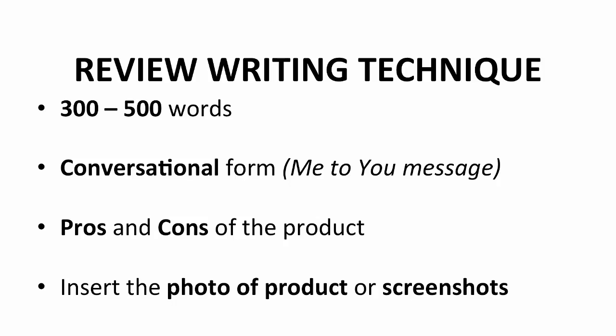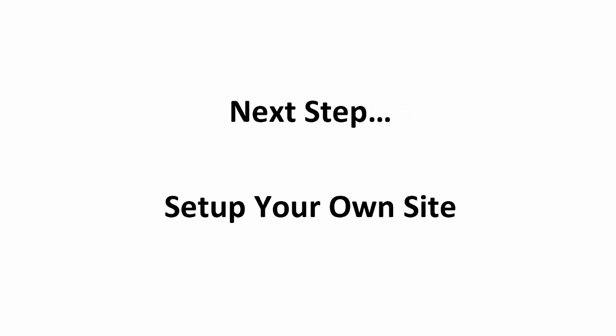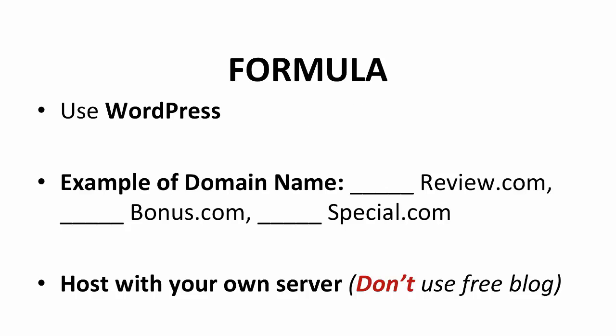In addition, you can insert a photo or screenshots of the product. For physical products, you can show different angles and measurements. Here are some small tips to enhance your review writing. You can insert the five-star rating system in the article — it gives easier understanding to the readers. Or you can insert a video in your article and upload to YouTube. For a physical product, you can make a demonstration video of the product. After the review writing, you need to set up your own site to upload your review and insert the affiliate link. You can use WordPress to create a site — it is the easiest way to do this without any programming knowledge.